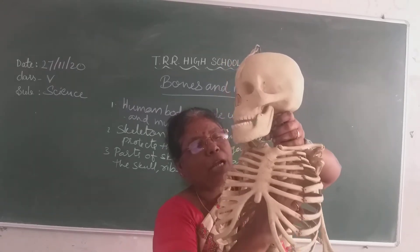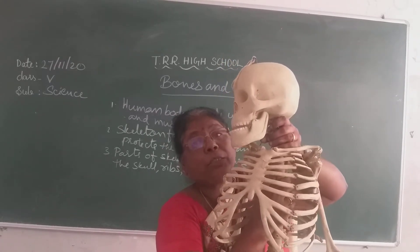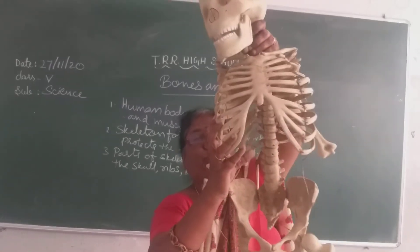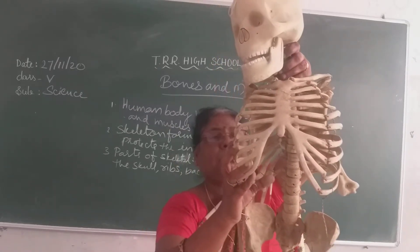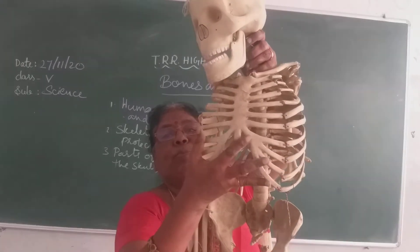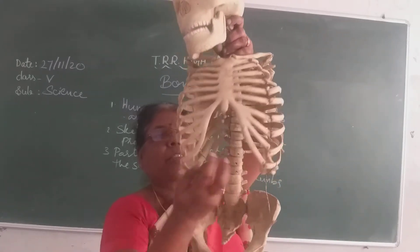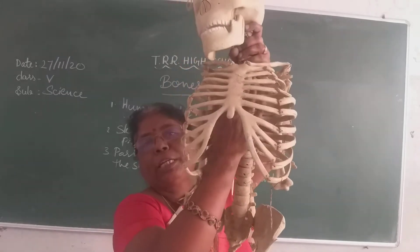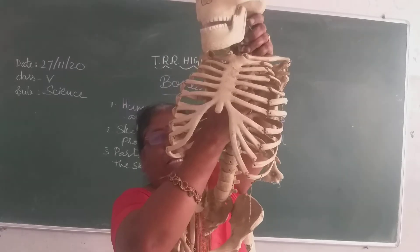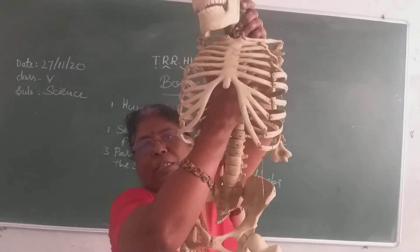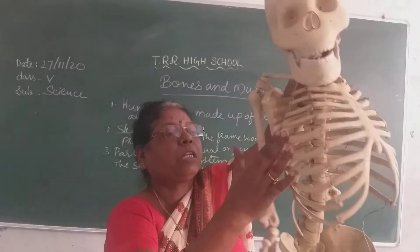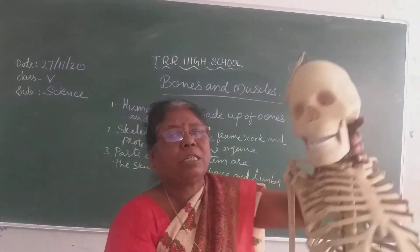Now here, which parts are protected by this rib cage? Here you are seeing fixed bones protecting very delicate organs of our body. That is the heart and lungs — heart and lungs are protected by the rib cage. These bones are curved and connected with the backbone at the back.